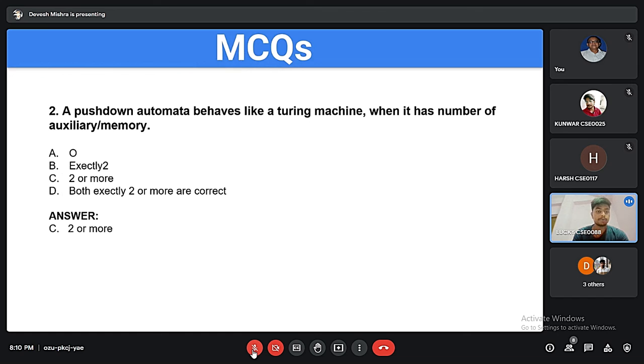The second question is: pushdown automata can behave like a Turing machine when it has how many auxiliary memories? It can be answered as 0, exactly 2, or 2 or more. The answer is 2 or more.